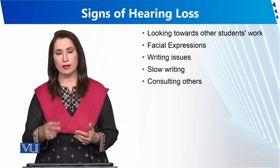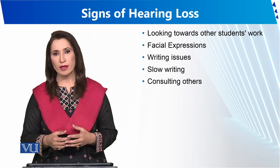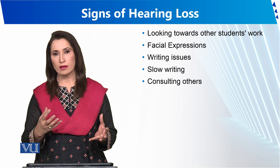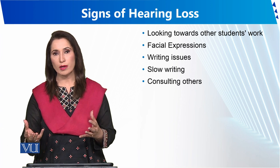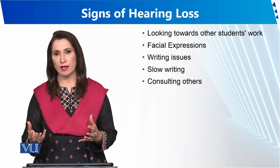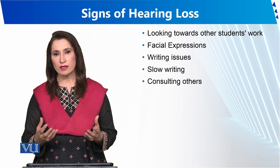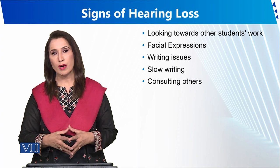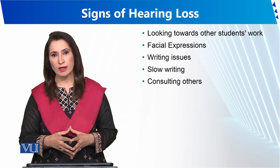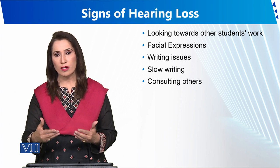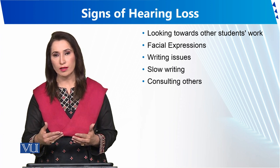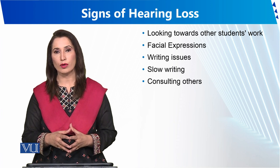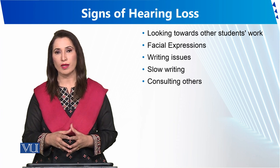Sometimes there is brain dysfunction and there is a learning disability such as dyslexia. In dyslexia, brain dysfunction means the child cannot understand the problem and respond to it. There are multiple issues that can overlap with hearing loss, and these should all be considered.